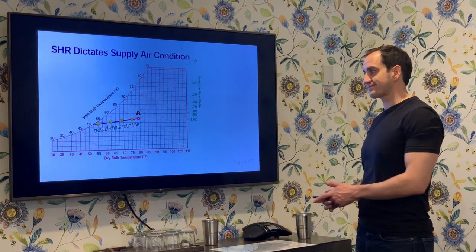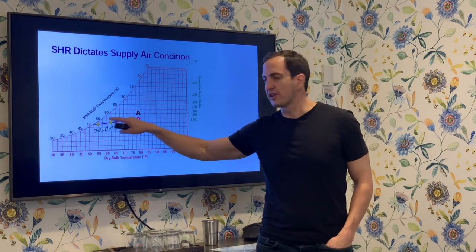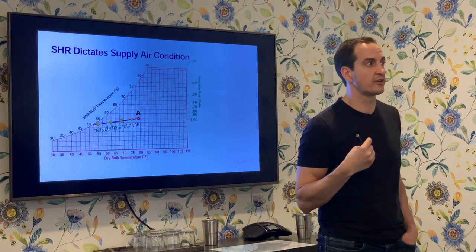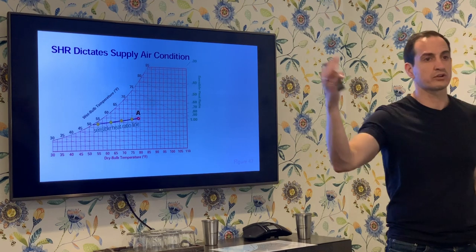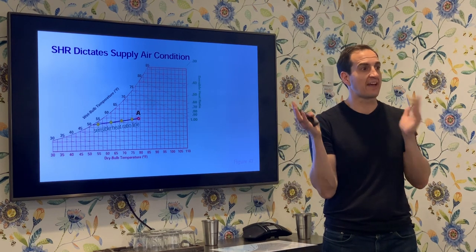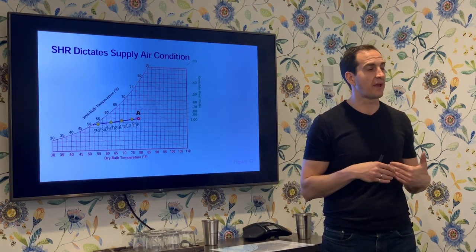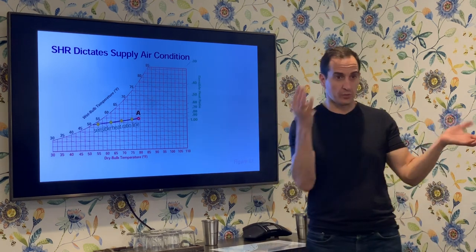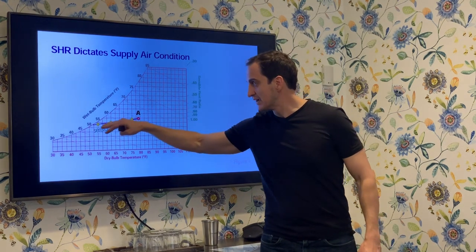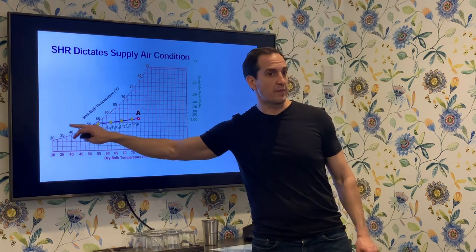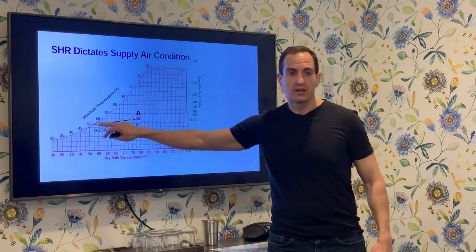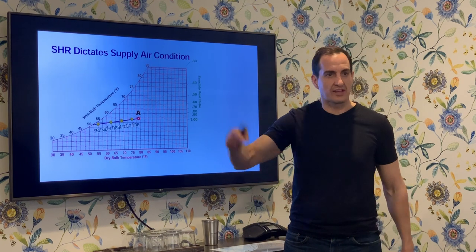If I know how many lights are in the room and how much water is coming out of the plants, I can calculate what sensible heat ratio I need to adequately keep the space at the right temperature. I take the point I'm trying to maintain and draw a line at that ratio away from it. The further I get from the room condition along that line, the less air I need to process per unit time to maintain the condition.